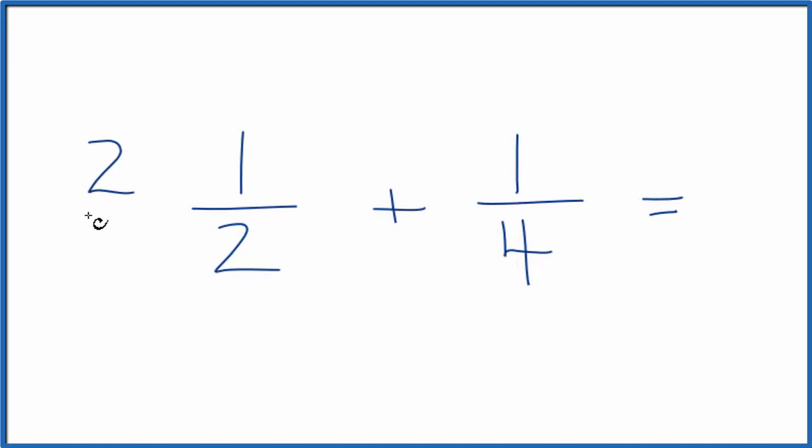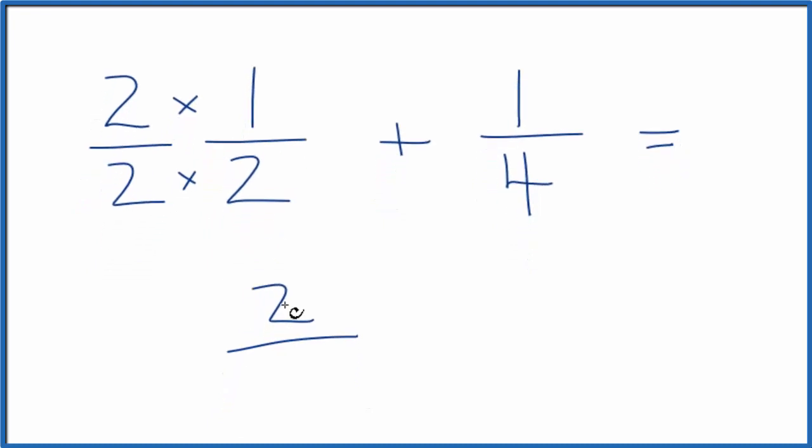I'm going to multiply two over two times one-half, because two over two, this is just one, so I'm not changing the value, just how it's written. Two over two, that gives us two. Two times two is four.